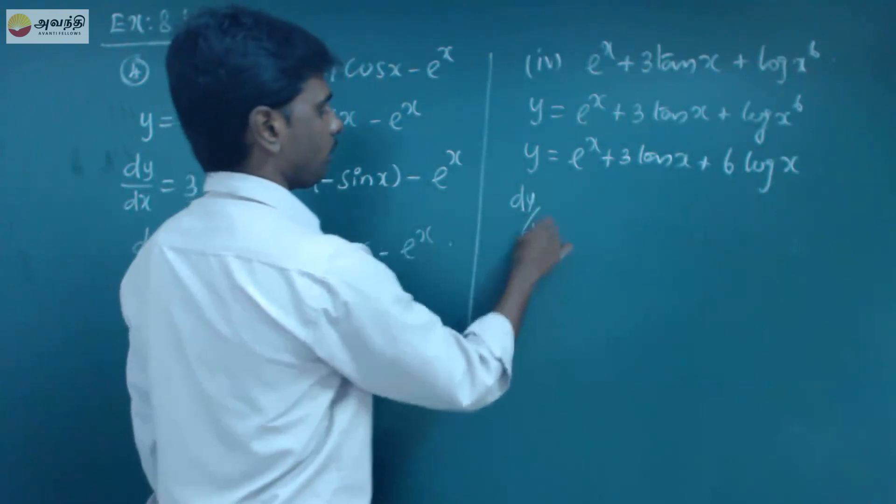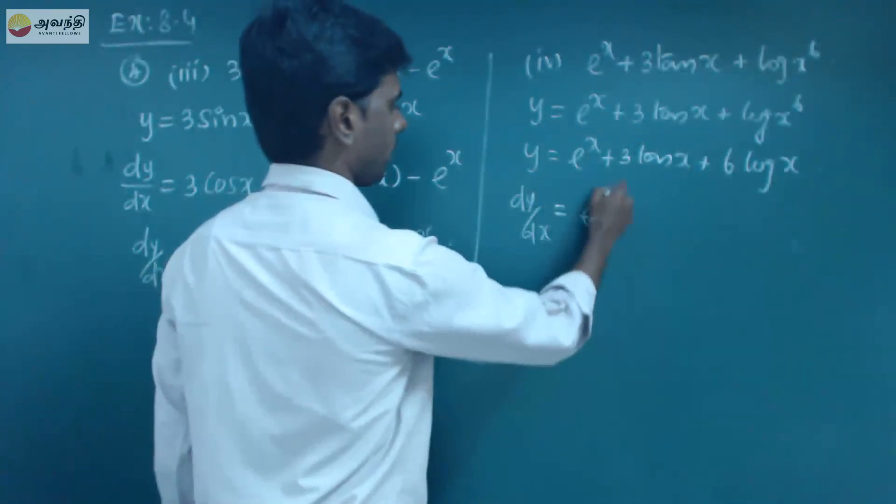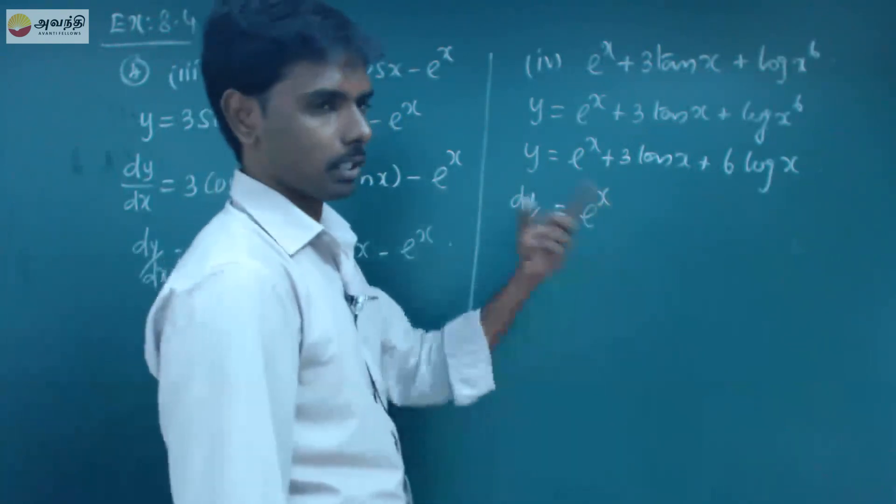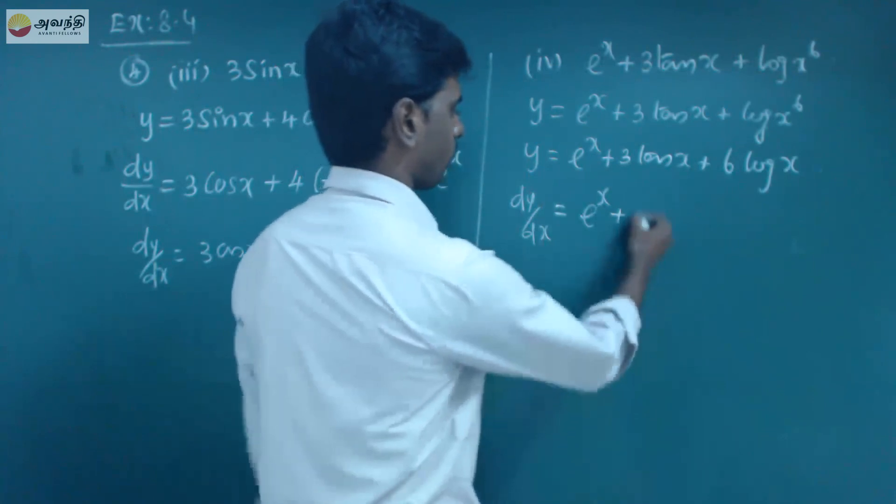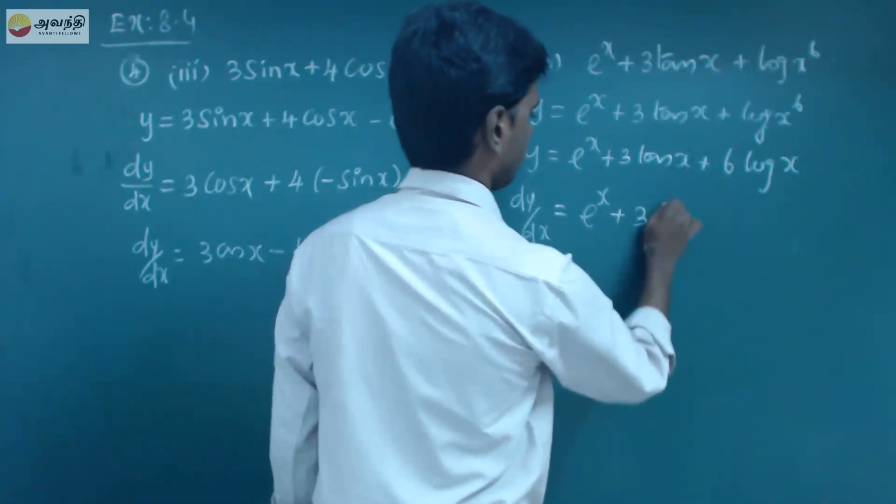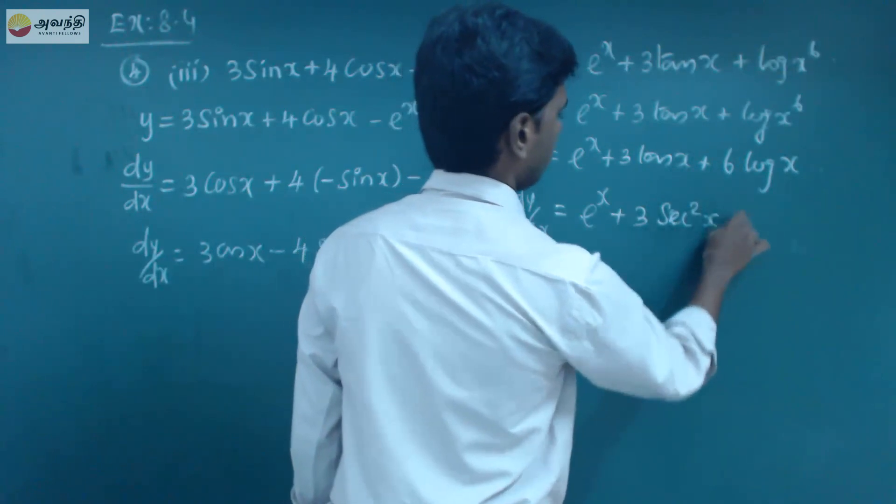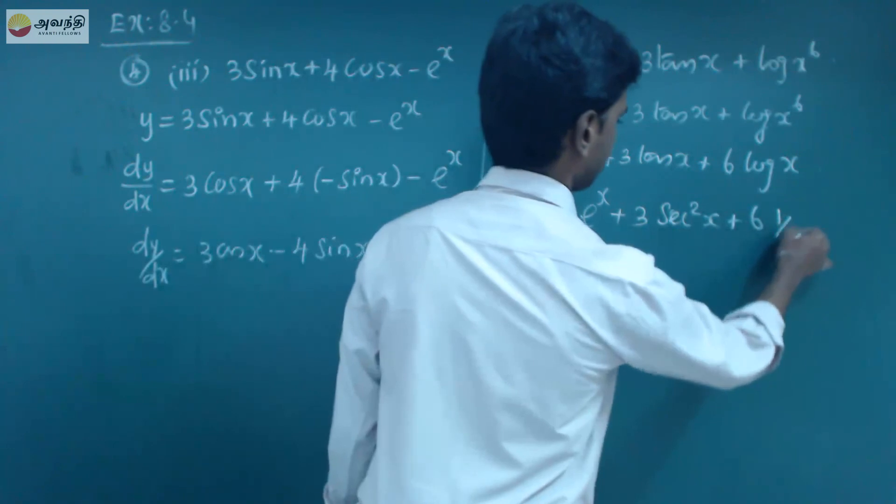Differentiation panna oh, so dy by dx equal to e power x differentiation panna e power x thang, x apart differentiation 1 plus 3 tan x differentiation 3 tan x differentiation secant square x, so that is secant square x plus 6 log x differentiation 1 by x. So that's all.